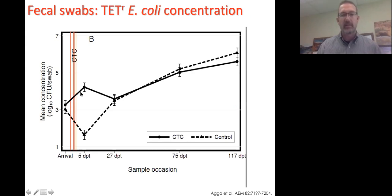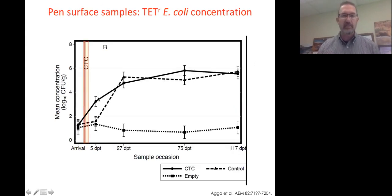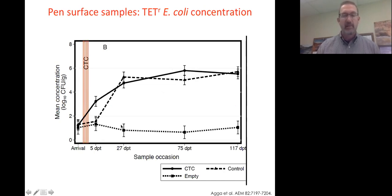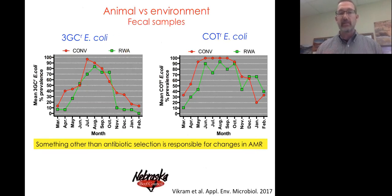When we looked at tetracycline resistance, we saw a small increase in treated animals right after the feeding period, but it essentially went away by 27 days after treatment. There was no significant difference in resistance in the fecal shedding of these cattle. Similarly, pen surface samples showed very little difference between treated and control animals for tetracycline-resistant E. coli, but a big difference between occupied pens and empty pens not receiving manure.